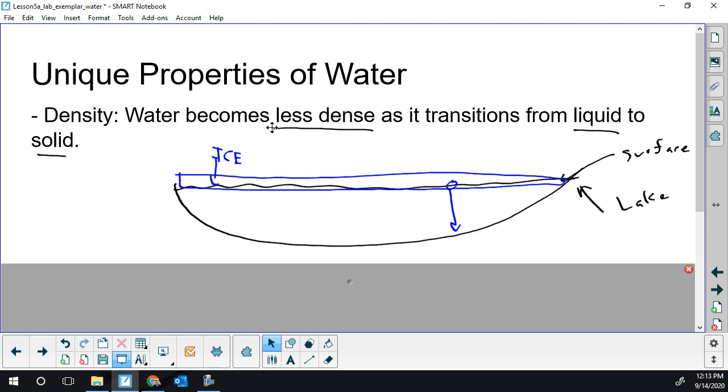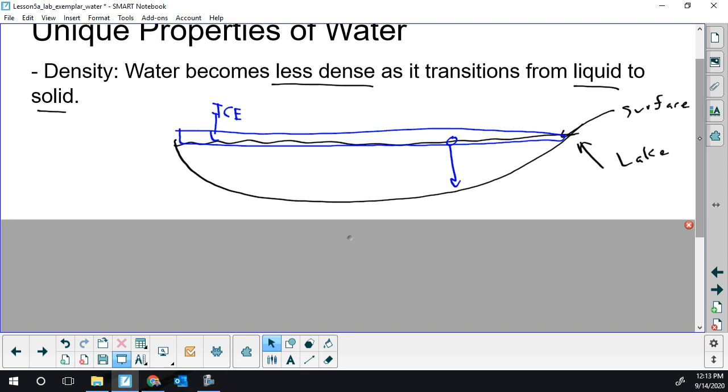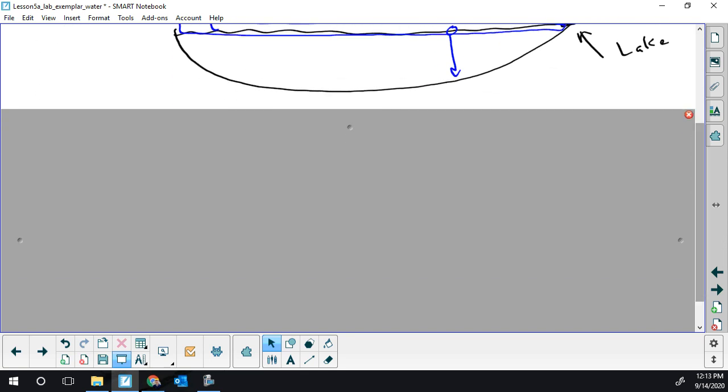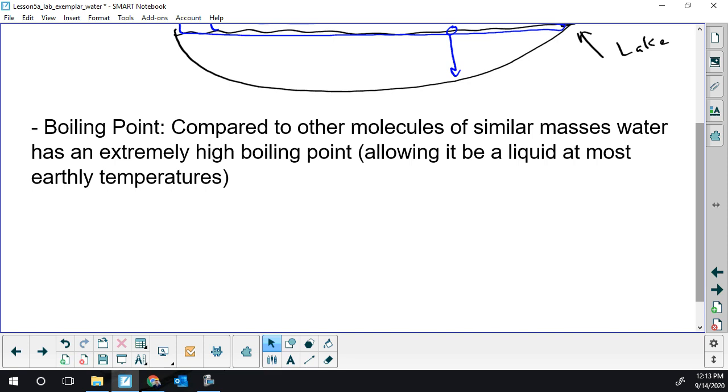So you have to remember the density of water when it freezes goes down due to its expansion and spreading out. And hopefully you can remember, hopefully everybody's seen something freeze and maybe seen that plastic bottle be stretched. If you haven't done it, I wouldn't try. We also see a very unusual boiling point with water. Compared to other molecules of similar masses, water has an extremely high boiling point, allowing it to be a liquid at our sort of earthly room temperatures.